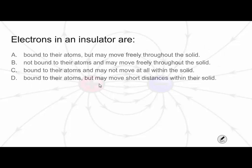Question two: electrons in an insulator are — A, bound to their atoms but may move freely throughout the solid; B, not bound to their atoms and may move freely throughout the solid; C, bound to their atoms and may not move freely at all within a solid; or D, bound to their atoms but may move short distances within their solid. The answer is D — electrons in an insulator are bound to their atoms but may move short distances within their solid.